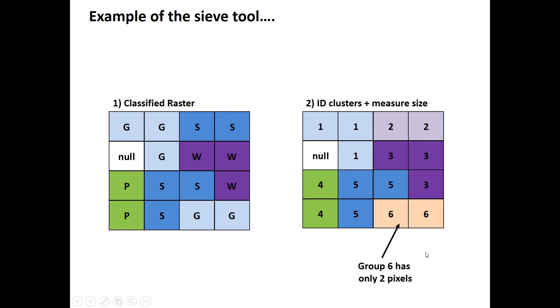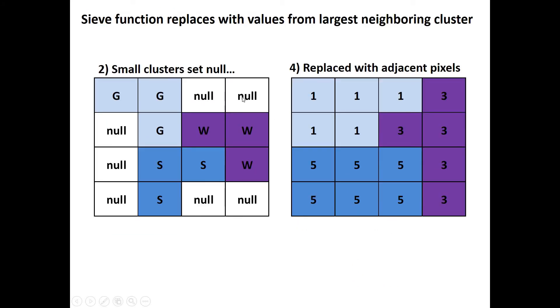If they're small like that maybe you want to sieve out all of those clusters that have less than three pixels. So if we do that we would then set those pixels null because they were part of very small clusters. Then we would replace the empty pixels with the adjacent pixels. So these two nulls get replaced with class one group one here. In this case one of them gets replaced with five and one of them gets replaced with three or S and W.